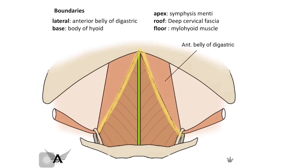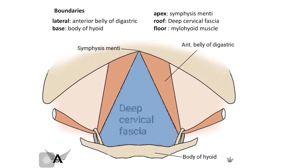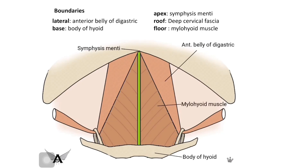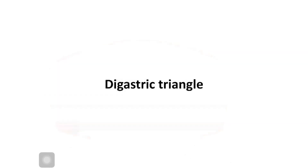Starting with the submental triangle, its boundaries are: laterally bounded on both sides by the anterior belly of digastric, the base is formed by the body of hyoid, the apex is formed by the symphysis menti, the roof is formed by the deep cervical fascia, and the floor is formed by the mylohyoid muscle from both sides which meet at the median fibrous raphe. The contents are the submental lymph nodes and the submental veins.